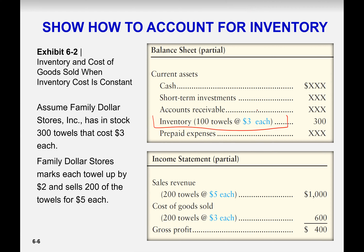Inventory is shown on the balance sheet at cost price, not the sale price. For example, if we made 100 towels and couldn't sell them, that is inventory. The balance sheet is a snapshot of the total business worth on a specific date — on that date, how many products you couldn't sell is your inventory, and it is reported on the balance sheet.